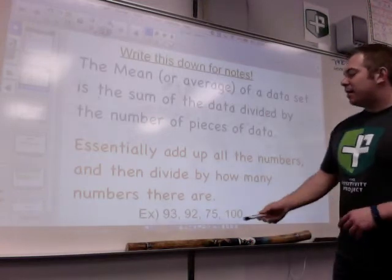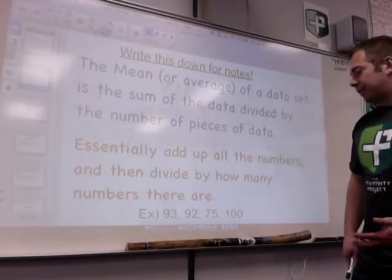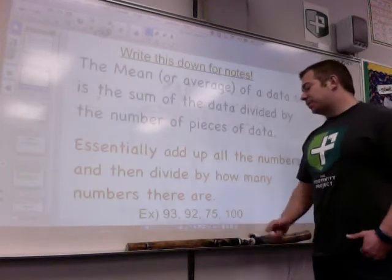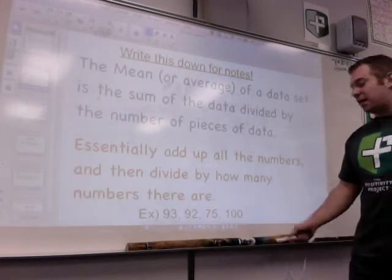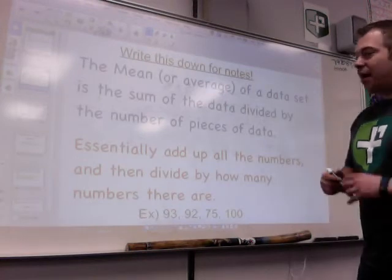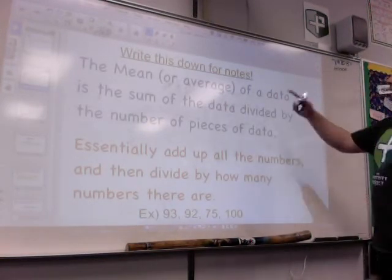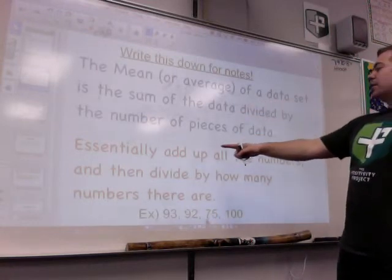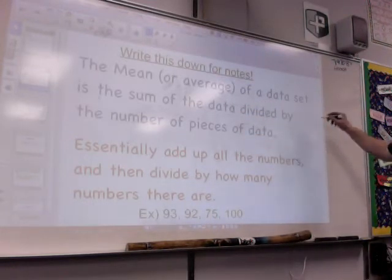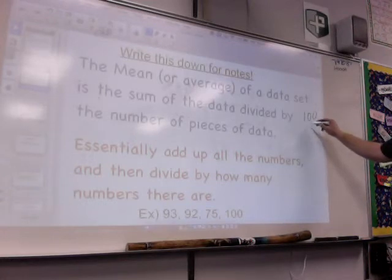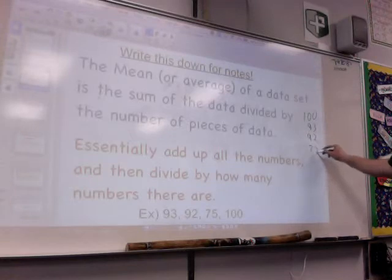For example, on the bottom here, I have, let's say these are my test scores. I've got a 93%, a 92%, a 75%, and a 100%. I want to know what my average score is. So you take, you add up all the numbers that I have. So I have 100 plus 93, 92, and 75.